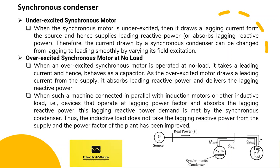When the synchronous motor is underexcited, it draws a lagging current from the source and hence supplies leading reactive power or absorbs lagging reactive power. Therefore, the current drawn by a synchronous condenser can be changed from lagging to leading smoothly by varying its field excitation.